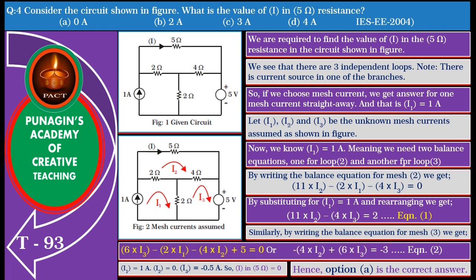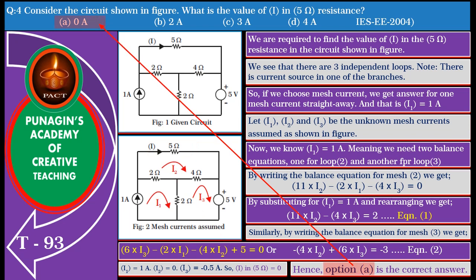By solving the two simultaneous equations, we get I2 equals 0 and I3 equals minus 0.5 amperes. We know I1 equals 1 ampere. So the current I in the 5 ohm resistor equals 0. Hence, option A is the correct answer.